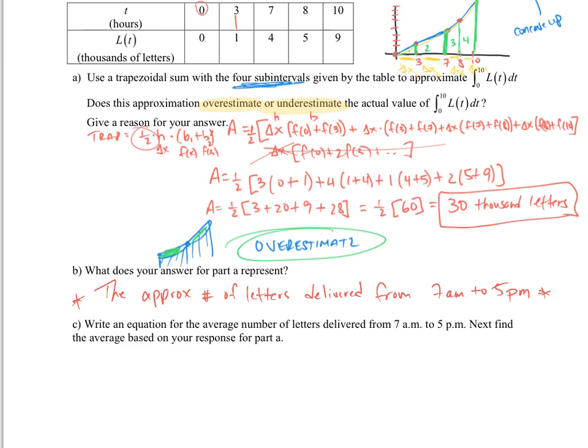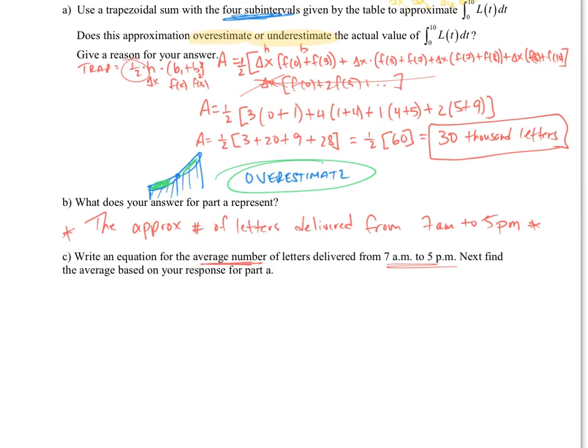And then the next one says, write an equation for the average number of letters delivered from 7, next find the average based on your response from part A. Well, this is an average value function. The average value function is you're going to take what you're doing and divide it over the interval. So we want 1 over B minus A from the interval from A to B of f of x dx. That's the average value.